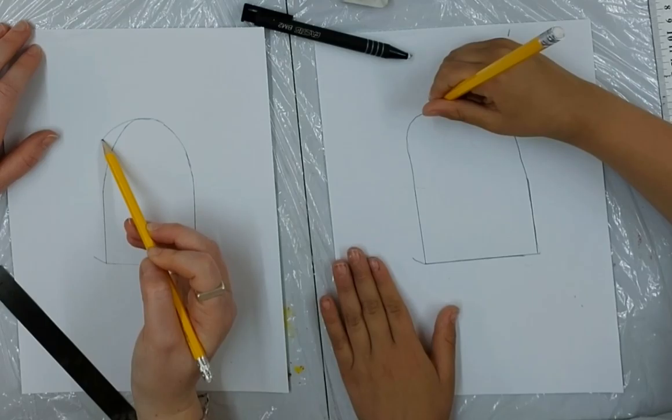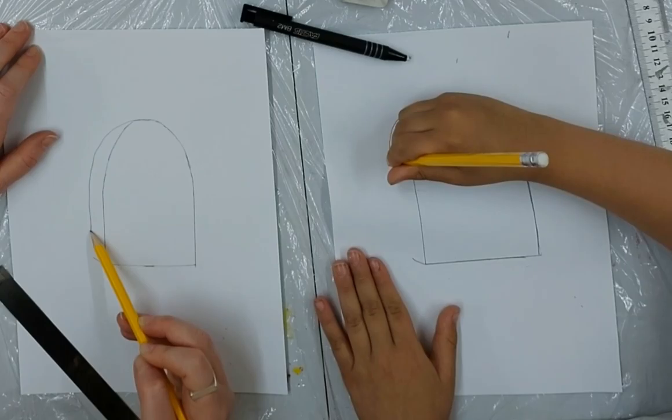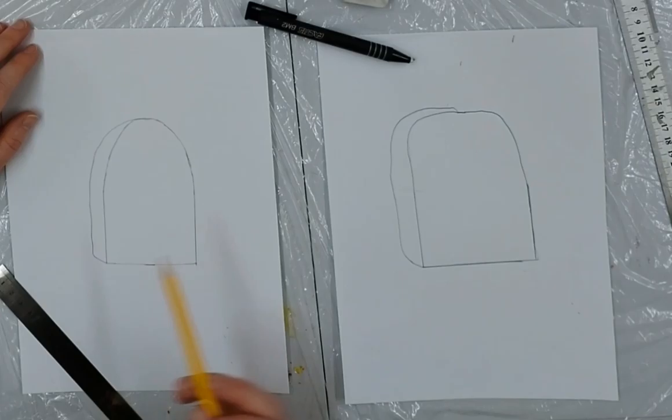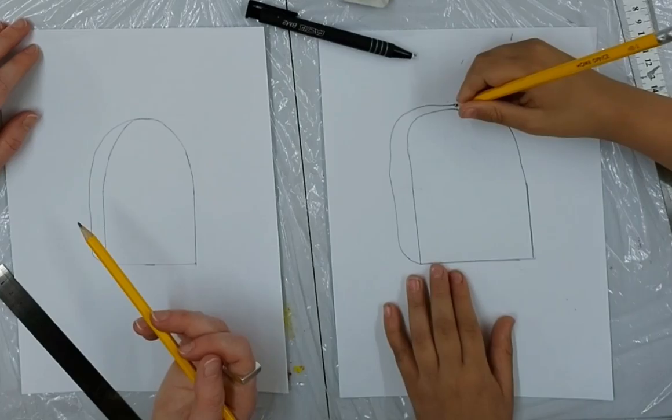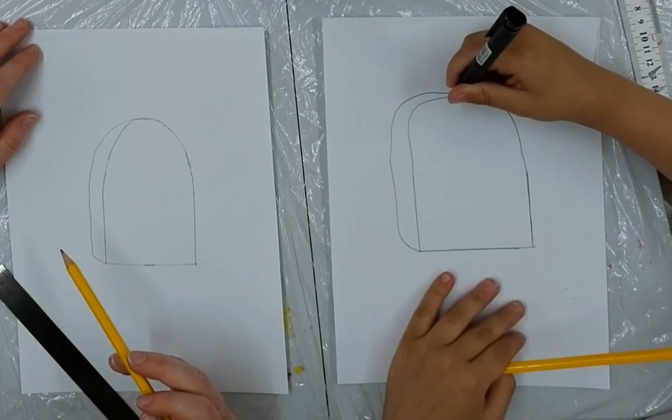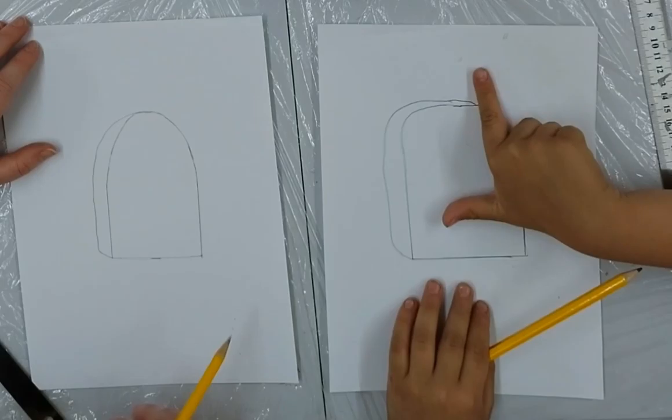Perfect. And then we can do the depth of the popsicle by adding a little bit of a slanted line on the side. Perfect. And from the middle of the top, the skinny, skinny, skinny line is starting, but then it starts to go the exact same way. The exact same way as the line. Perfect.